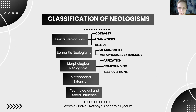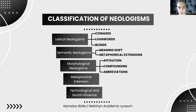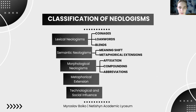Metaphorical extension involves assigning new meanings to existing words based on analogy or metaphor — examples include mouse for a computer device, cloud for internet storage, or virus for digital malware. Technological and social influence describes how new words emerge due to advancements in technology, science and culture — for example, cybersecurity, metaverse, influencer and cancel culture.